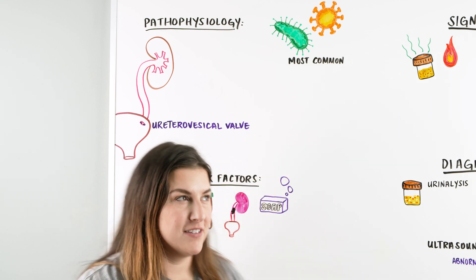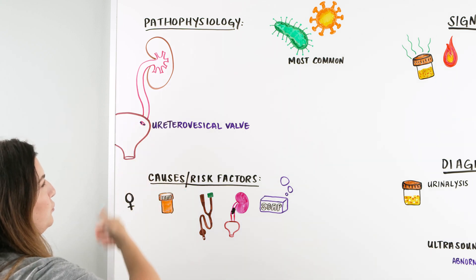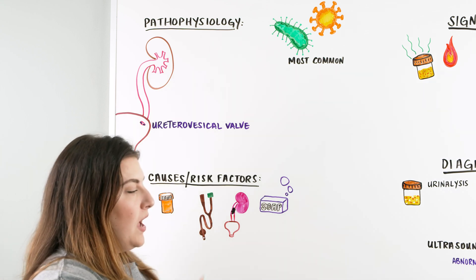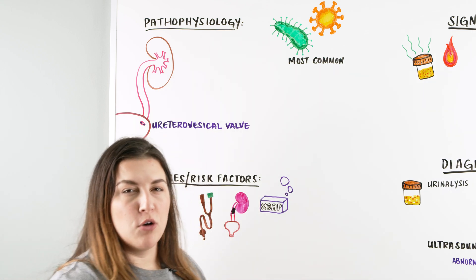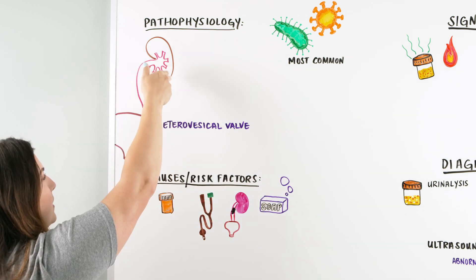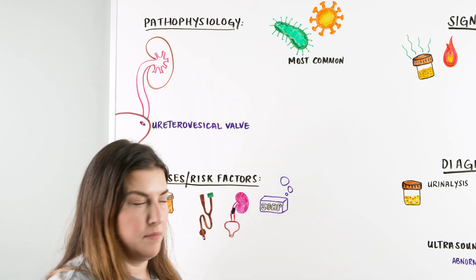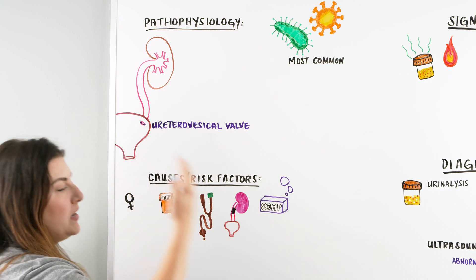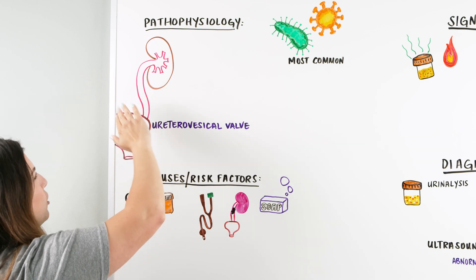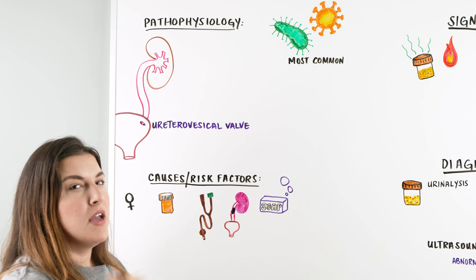Let's get started here with UTIs. We're going to talk about the pathophysiology. When we're talking about UTIs we're focusing on the urinary tract — the kidneys, the ureters, bladder, and our urethra. The normal flow is: kidneys produce filtrate, filtrate goes down through our bladder, and then through the urethra out of our body. When we get an infection, we can have viruses, fungi, or bacteria that can accumulate, travel up into our kidneys, and cause various types of infections or inflammation.